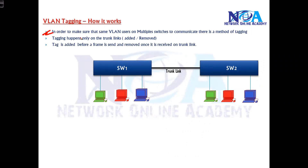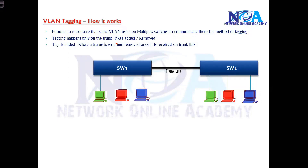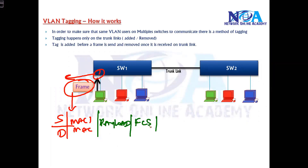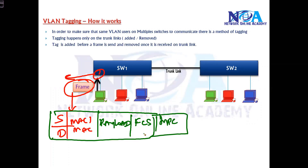As we discussed, in order to make sure that same VLAN users spanning over multiple switches can communicate, they use a method of tagging, and this tagging is done on the trunk links. When the switch receives or forwards a frame, it will be a normal frame — containing source and destination MAC addresses along with the actual payload, frame check sequence, and type field. This is your normal frame. A normal frame contains source and destination MACs used for identifying the specific device, but there is no information about which VLAN it belongs to.